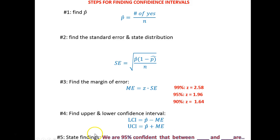The very last step, of course, is stating your findings with the sentence. We are 95% confident that between blank and blank are diseased, or whatever the situation is that I'm looking at.